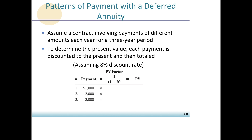In period one we're receiving a payment of one thousand dollars. What we need to find out is: what would I need to invest today to have a thousand dollars at the end of year one? The second payment is two thousand dollars — what would I have to invest today to have two thousand dollars at the end of the second year? The third payment is three thousand dollars — what would I have to invest today to have three thousand at the end of three years?